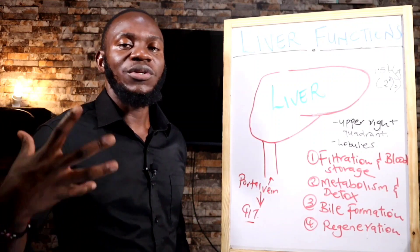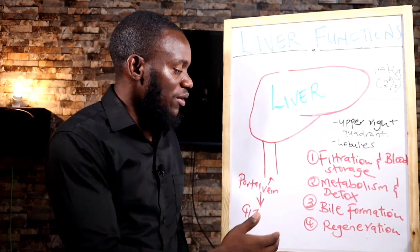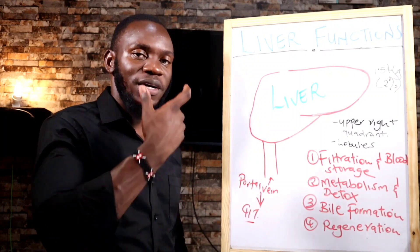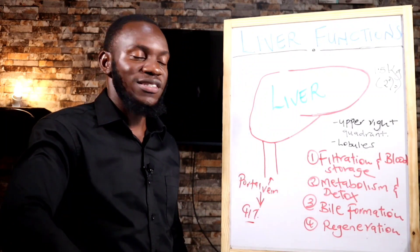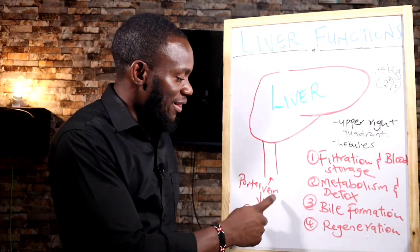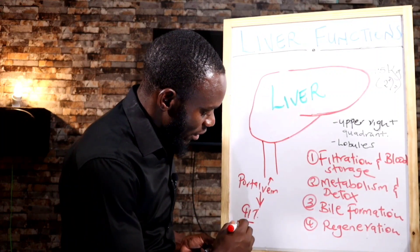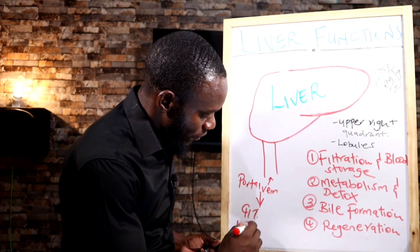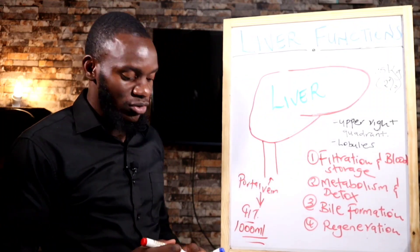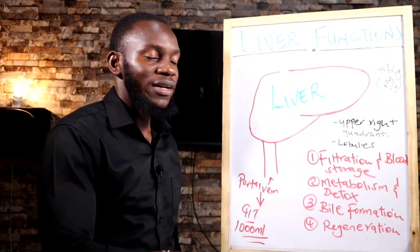This portal vein carries all these nutrients, blood, and everything from the gut — from your stomach and the stomach lining, all the way through the intestines — into the liver. It carries about 1,000 ml of blood. You can imagine how much blood that is — it's a lot.